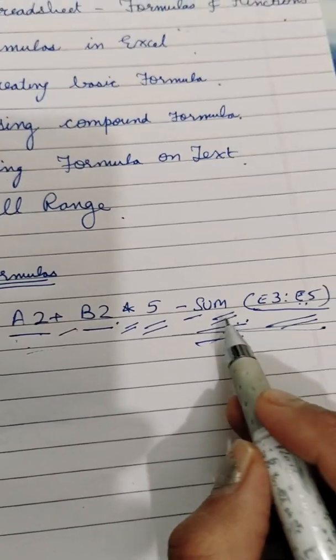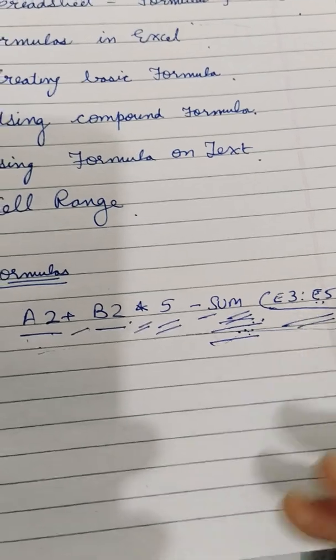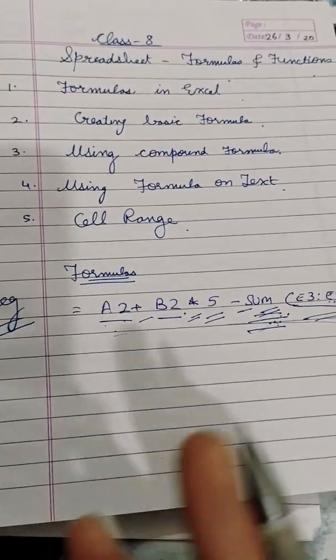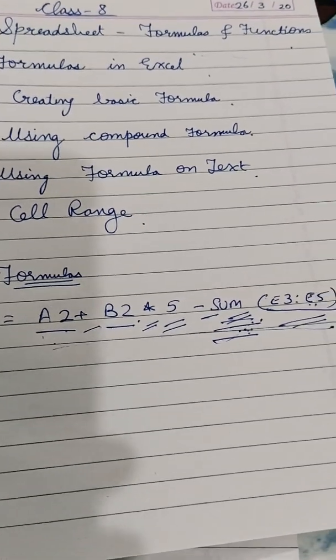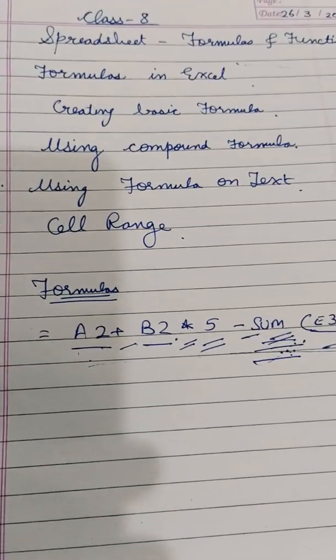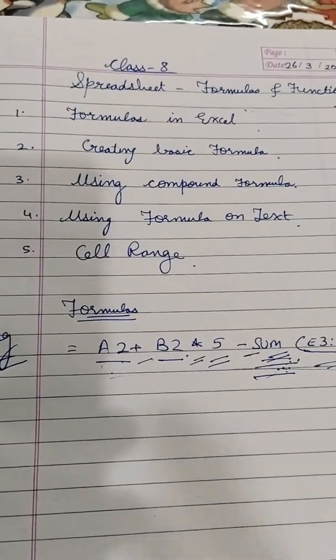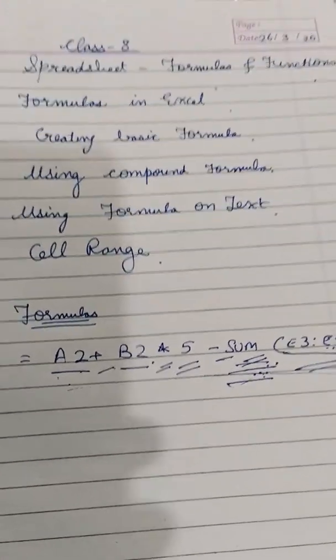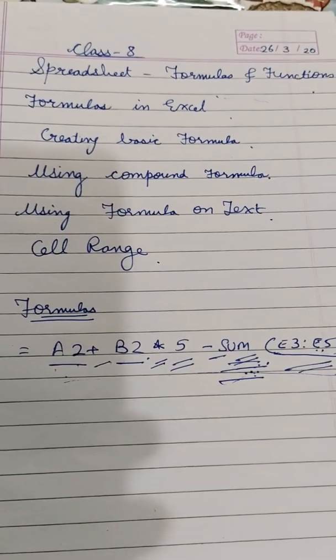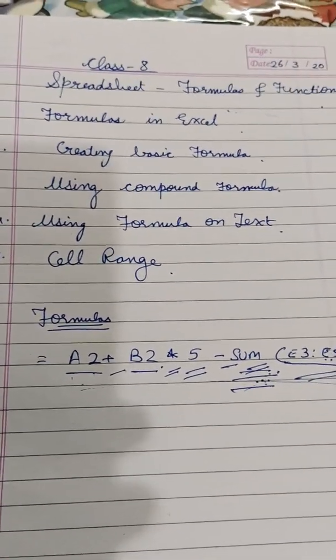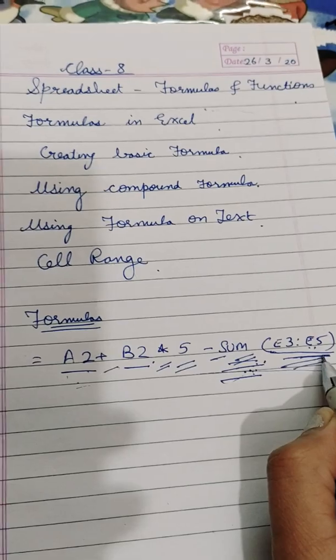But function is inbuilt function that is already there in Excel, like finding sum, we have SUM function. To find average we have AVERAGE function. To find maximum value out of given values we have MAX function, we have MIN function. But in formula we can include that inbuilt functions as well as other constant values, operators, and cell addresses and ranges too.